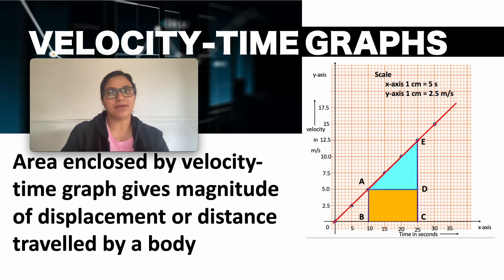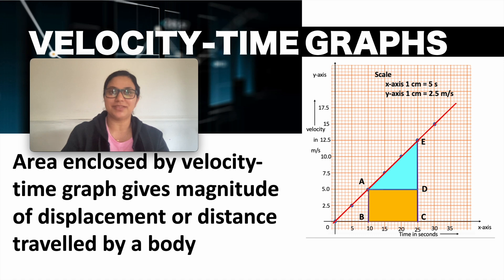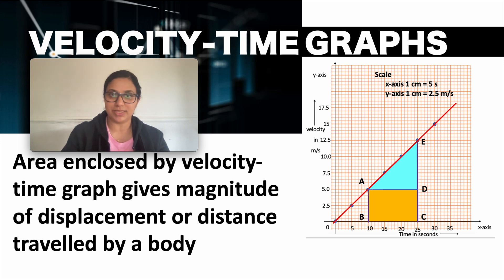Hello students, welcome back to JJ's physics class. Today we will be discussing velocity-time graphs. What is a velocity-time graph? The variation in velocity with time for an object moving in a straight line can be represented by a velocity-time graph. You can also determine the distance moved by the car from its velocity-time graph.